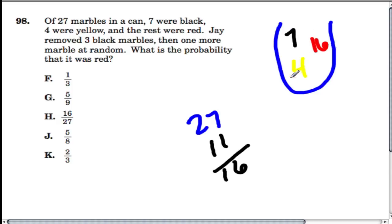This person Jay comes along and removes 3 of the black marbles, so that means there are now 4 black marbles, and then 1 more marble at random. What is the probability that it was red?